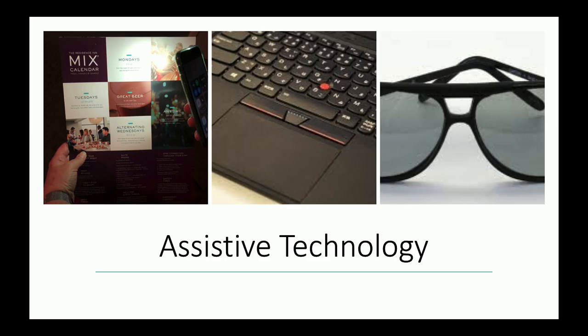Let's look at assistive technology. There's a picture of me where somebody highlighted a menu with their phone because I couldn't see it in the dark. Track pads exist partly for accessible needs. A lot of people say they're young and don't need glasses, but they're wearing them — that's already assistive technology.